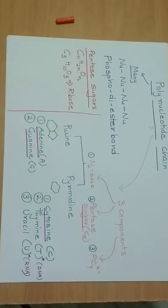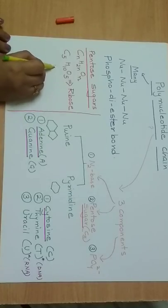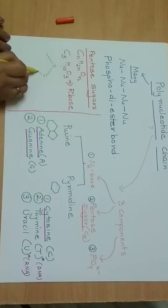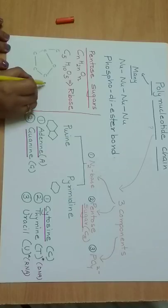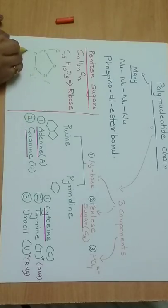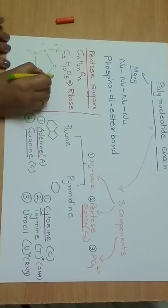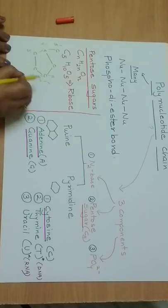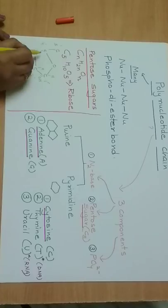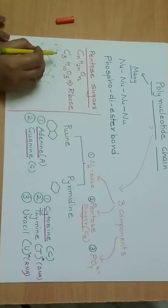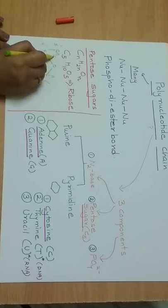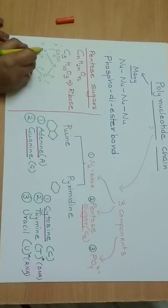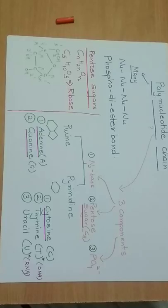Ribose has a ring structure. In the ring, we have carbons labeled 1', 2', 3', 4', and 5'. On each carbon there is one hydrogen atom and one hydroxyl group. The fifth carbon is attached to the fourth carbon, and the fifth carbon has CH2 and OH. This is the structure of a ribose molecule.